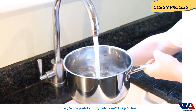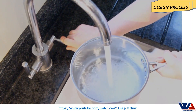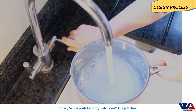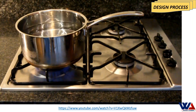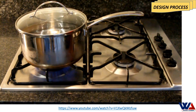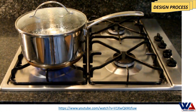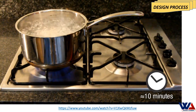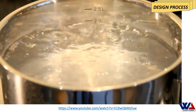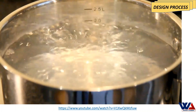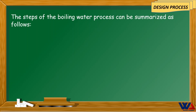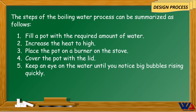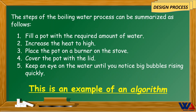1. Fill a pot with the required amount of water. 2. Increase the heat to high. 3. Place the pot on a burner on the stove. 4. Cover the pot with the lid. 5. Keep an eye on the water until you notice big bubbles rising quickly. The steps of the boiling water process can be summarized as follows — this is an example of an algorithm.